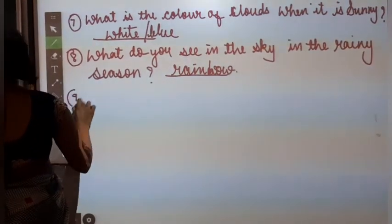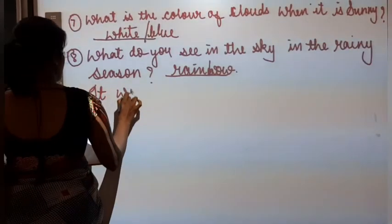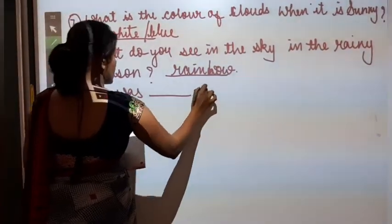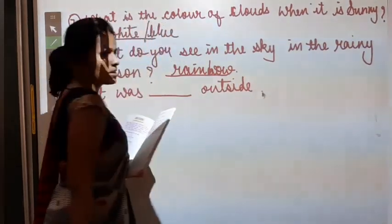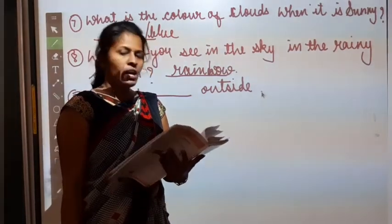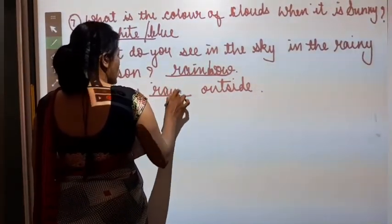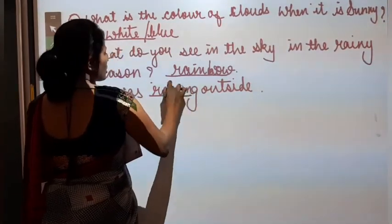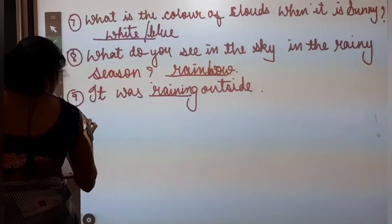Number nine. It was dash outside. This is about Anandi's rainbow. Okay? So it was rainy, sunny, cloudy or windy. So it was raining outside. Bahar barish ho rahi and Anandi was dreaming about the rainbow. Number ten.